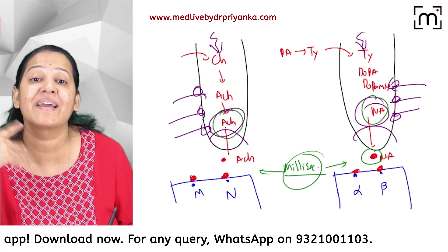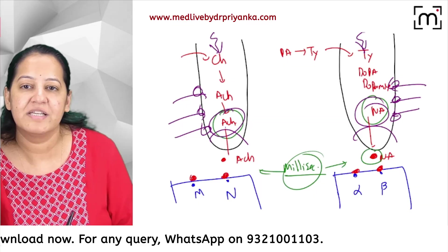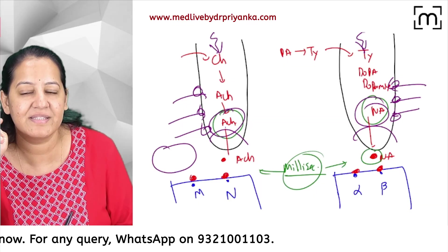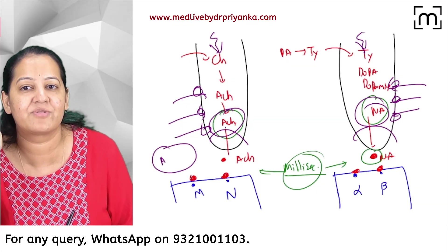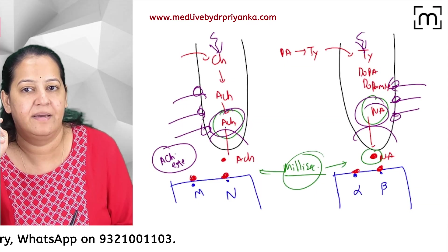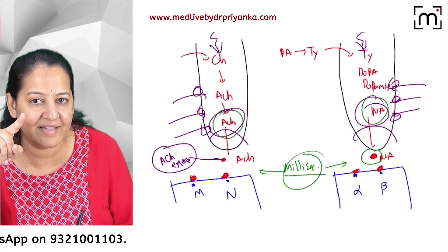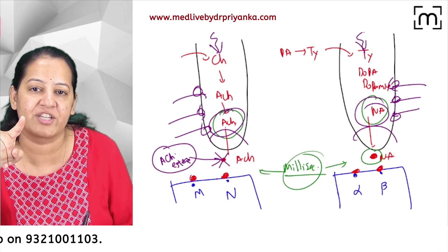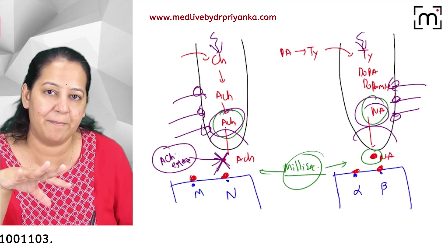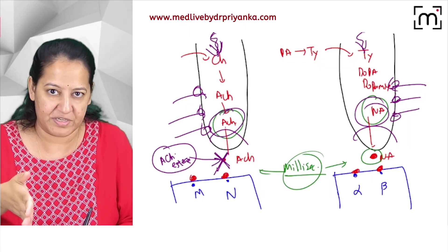After a millisecond, an enzyme called acetylcholinesterase degrades acetylcholine. This enzyme terminates the action of acetylcholine. After this, a new impulse can come and the cycle is repeated.